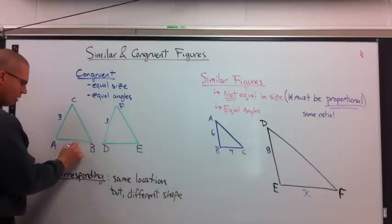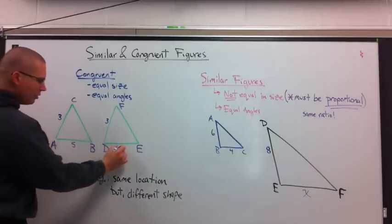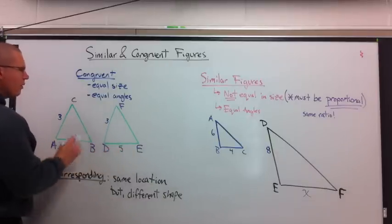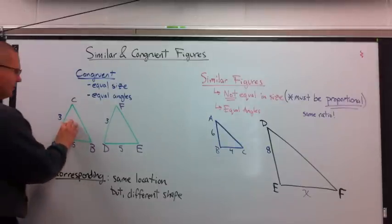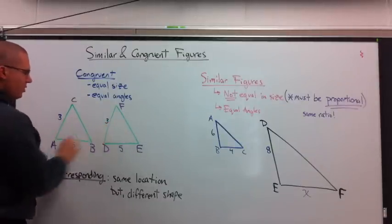If the bottom was 5, this side must also be 5 in order for things to be congruent. It means this shape is exactly the same size as this shape.